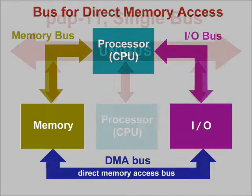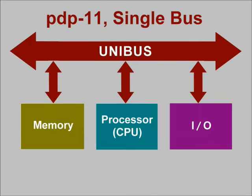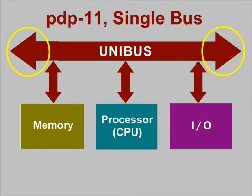What about the PDP-11? Well, in a typical PDP-11 system, memory, the central processor, and the I/O devices communicate over a single bus, in contrast to the two or three bus approach used in traditional computers. Because it is one bus, it's called a unibus. Notice the arrowhead that we've placed at each end of the bus — this indicates that elements can be continually added to the unibus in either direction.